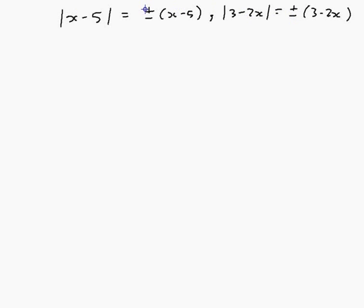We can have plus x minus 5 and plus 3 minus 2x. Or we can have plus x minus 5 and minus 3 minus 2x.